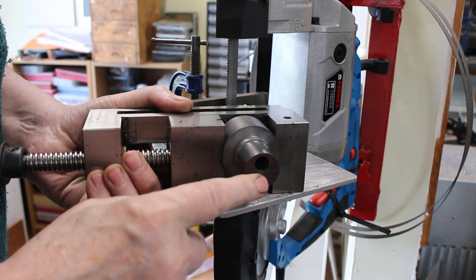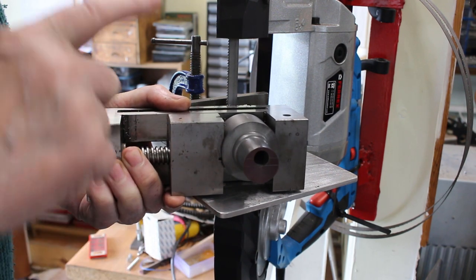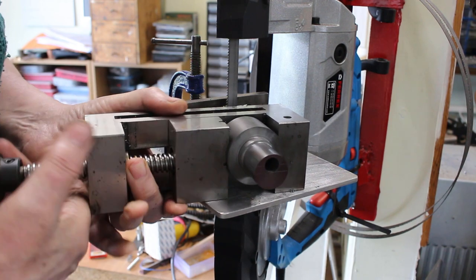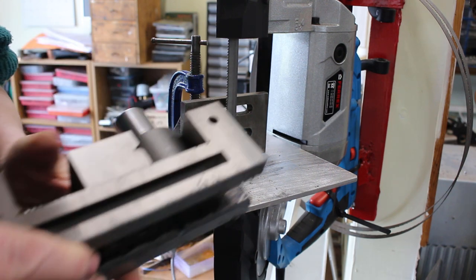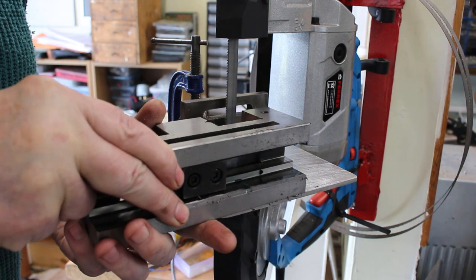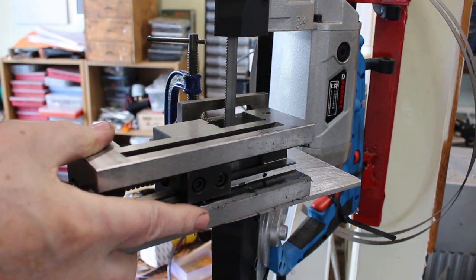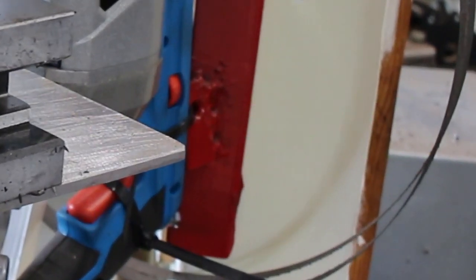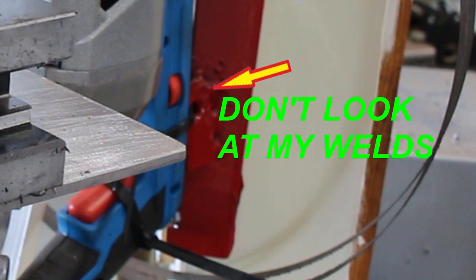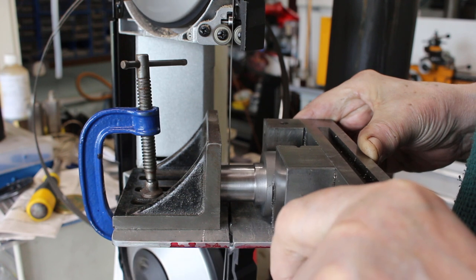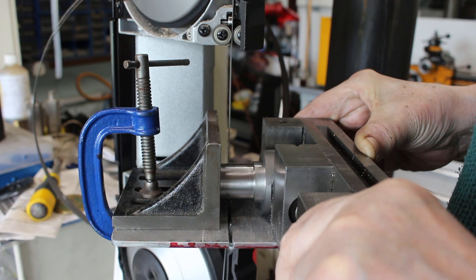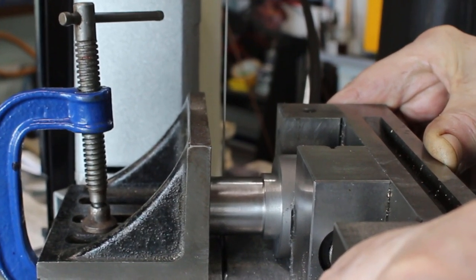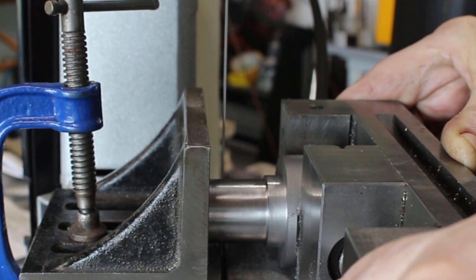Because it's got an offset hole I didn't fancy trying to part this off in the lathe so I'm going to do it on the bandsaw. I'm just going to hold it in this vise and I've got an angle plate set to give me a measured cut off thickness. Once I've cut off this eccentric I refaced the work piece in the lathe before cutting off the next one.